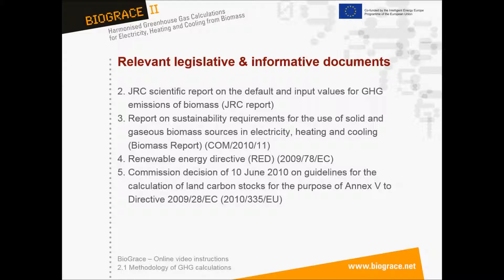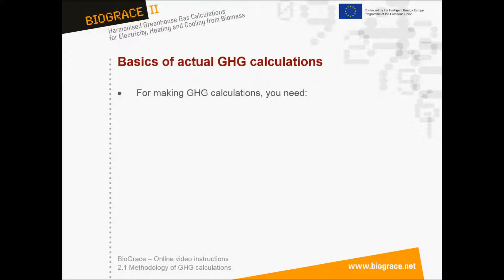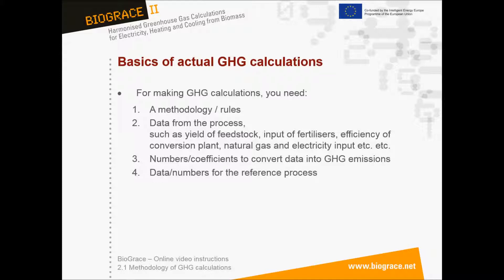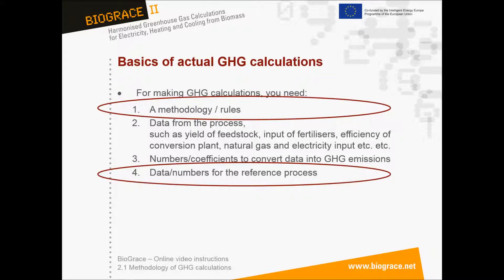For making actual greenhouse gas calculations you need four things: a methodology including detailed calculation rules; actual data from the final energy production process; numbers or coefficients to convert this data into greenhouse gas emissions; and data or numbers for the reference process. The methodology and the reference process will be dealt with in this video instruction, while the other two topics come back in separate instructions.